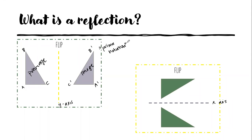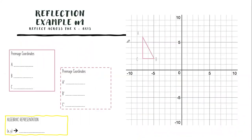Today we just have two examples for our learning, then we'll talk about a couple of things and you'll do the assignment. Example number one: we want to reflect this triangle across the x-axis. Watch me first. Let's write down our pre-image coordinates. Where is A?